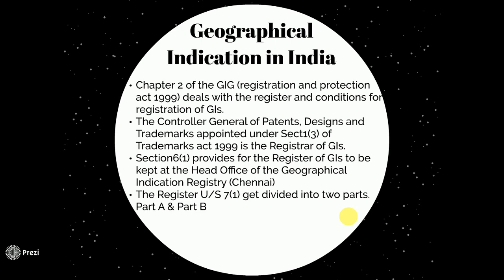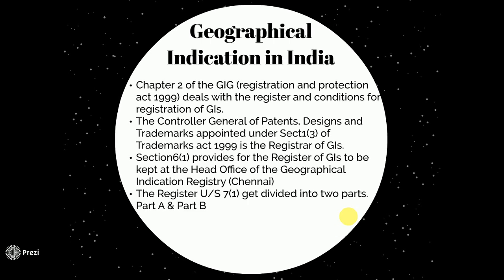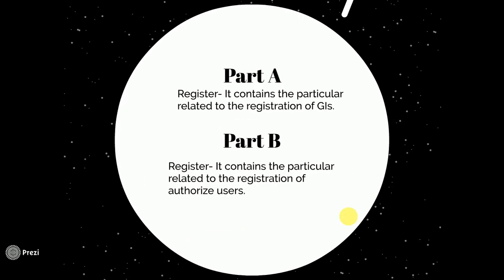Geographical Indication in India: Chapter 2 of the GI Registration and Protection Act deals with the registration and conditions for registration of GIs. The Controller General of Patents, Designs and Trademarks, appointed under Section 1, Subsection 3 of the Trademark Act 1999, is the Registrar of GIs. Section 6, Subsection 1 provides for the register of GIs to be kept at the Head Office of the Geographical Indication Registry, which is at Chennai. The register under Section 7, Subsection 1 is divided into two parts: Part A, which contains particulars related to the registration of GIs and products or goods, and Part B, which contains particulars related to the registration of authorized users and the association or area where the particular product has been registered.